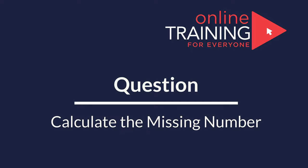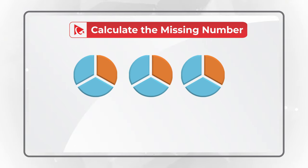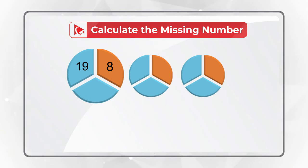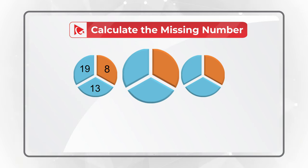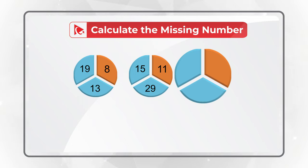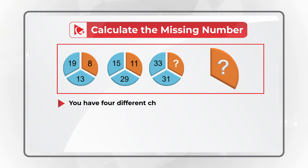Here is a puzzling question which has a very surprising solution. You're presented with three circles. Each circle is broken into three equal parts. The first circle has numbers 8, 19, and 13. The second circle has numbers 11, 15, and 29. The third circle has numbers 33, 31, and one number is missing. You need to calculate the missing number out of four different choices.